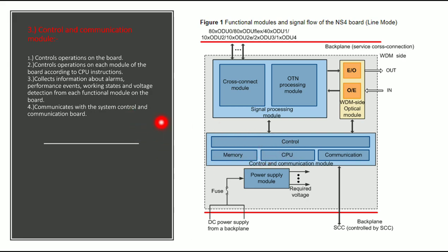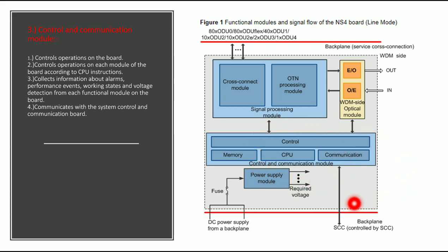Control and communication module: This module controls the operation of each module on the board according to CPU instructions. It collects information about alarms, performance events, working state, voltage, and the functional modules of the board. It communicates with the system control and communication board, which is the main control board in Huawei products, coordinating via the backplane.